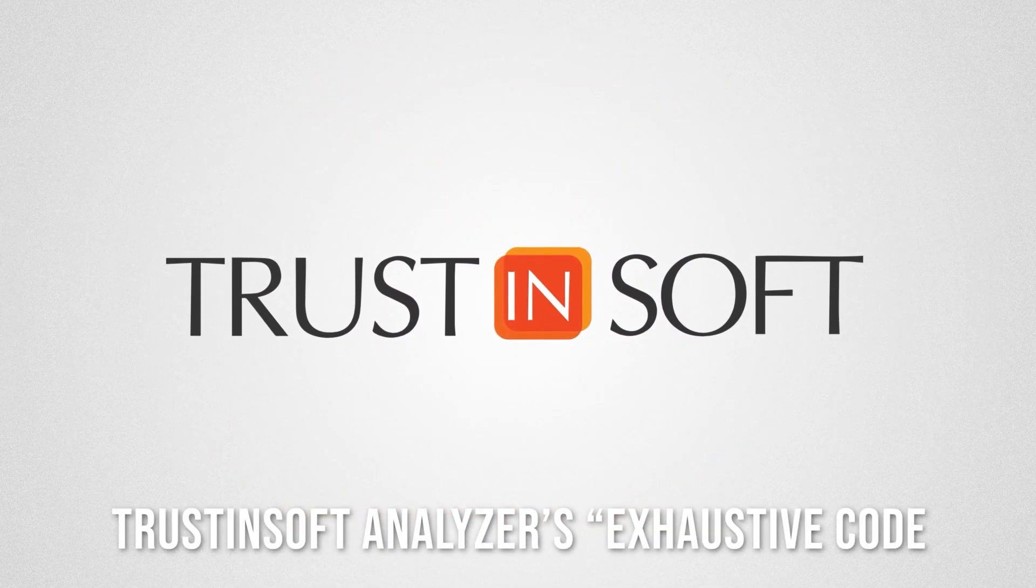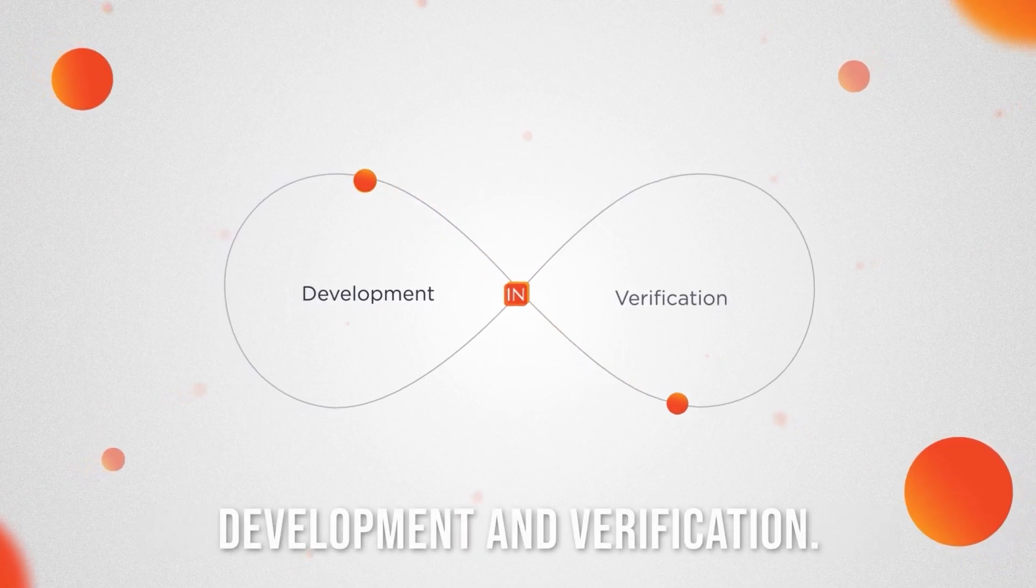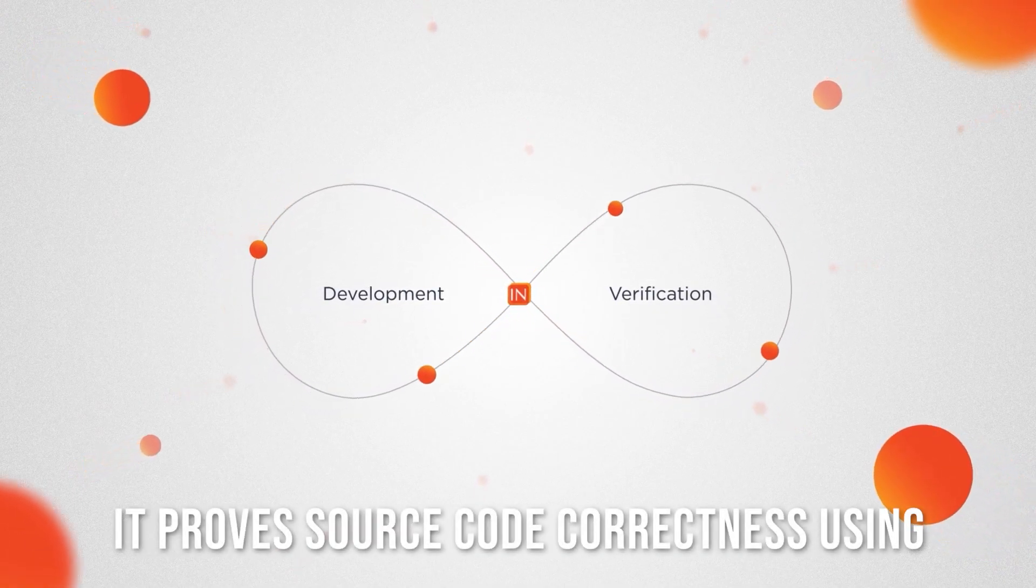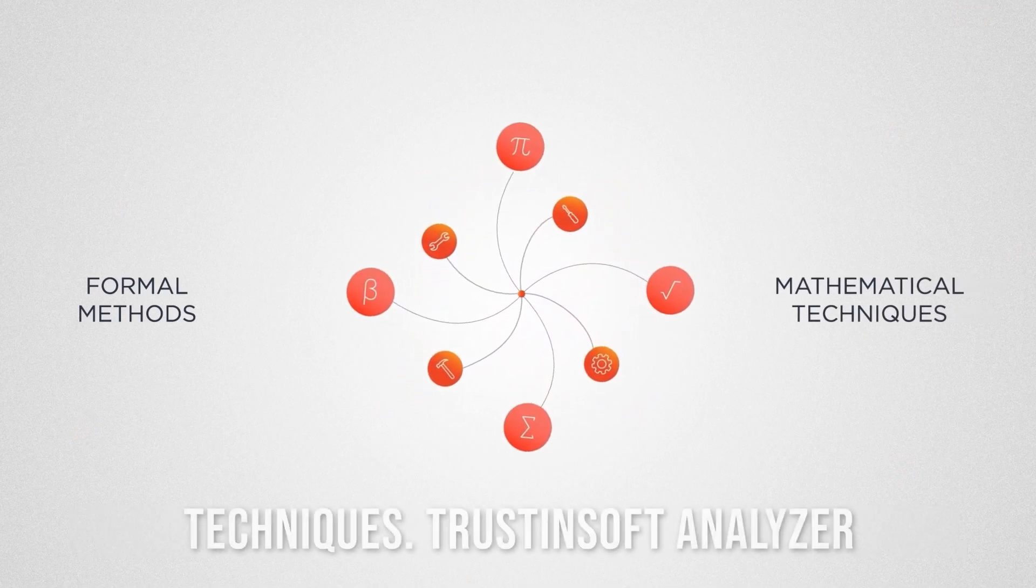Trust & Soft Analyzer's exhaustive code analysis is revolutionizing software development and verification. It proves source code correctness using formal methods and powerful mathematical techniques.